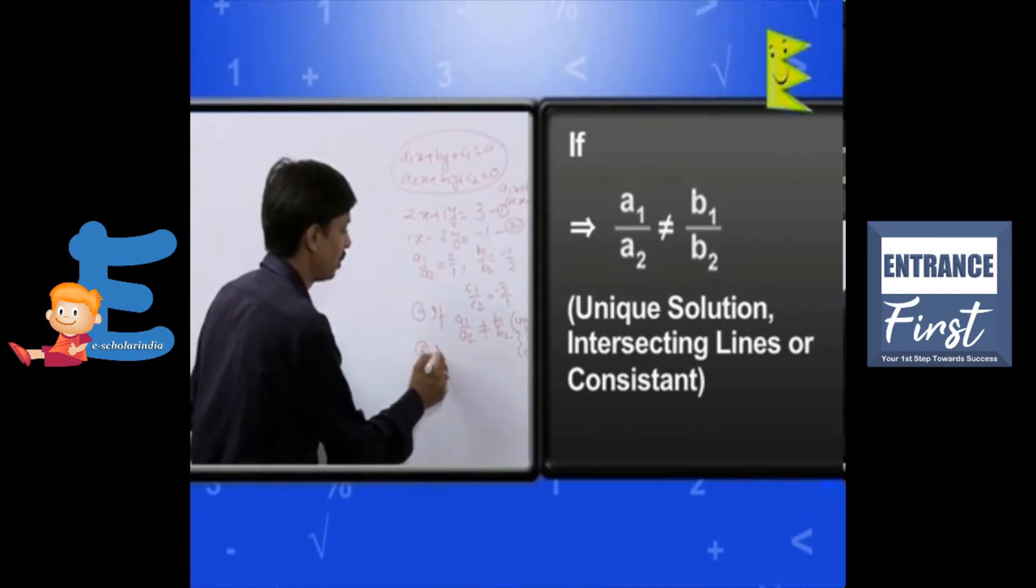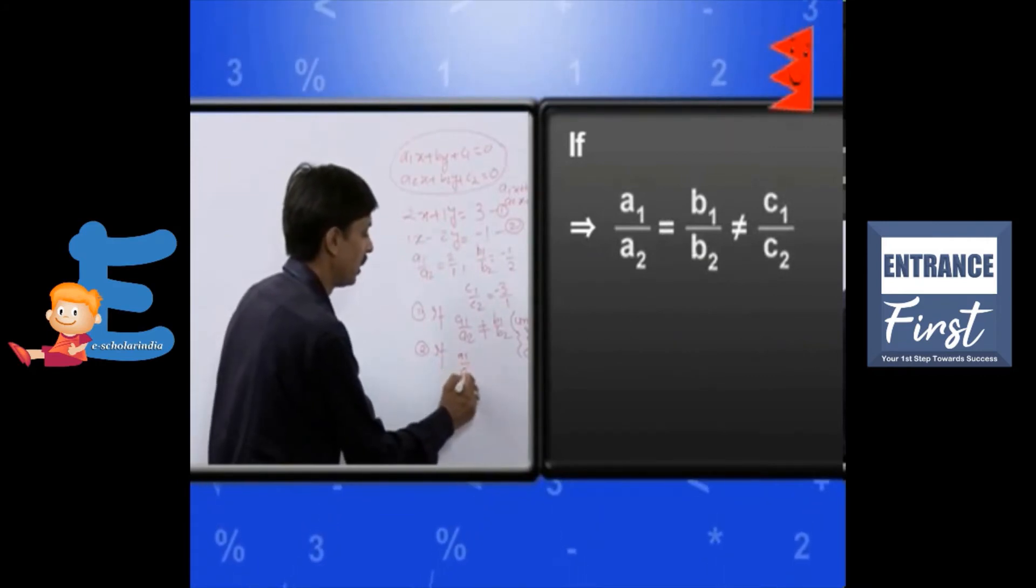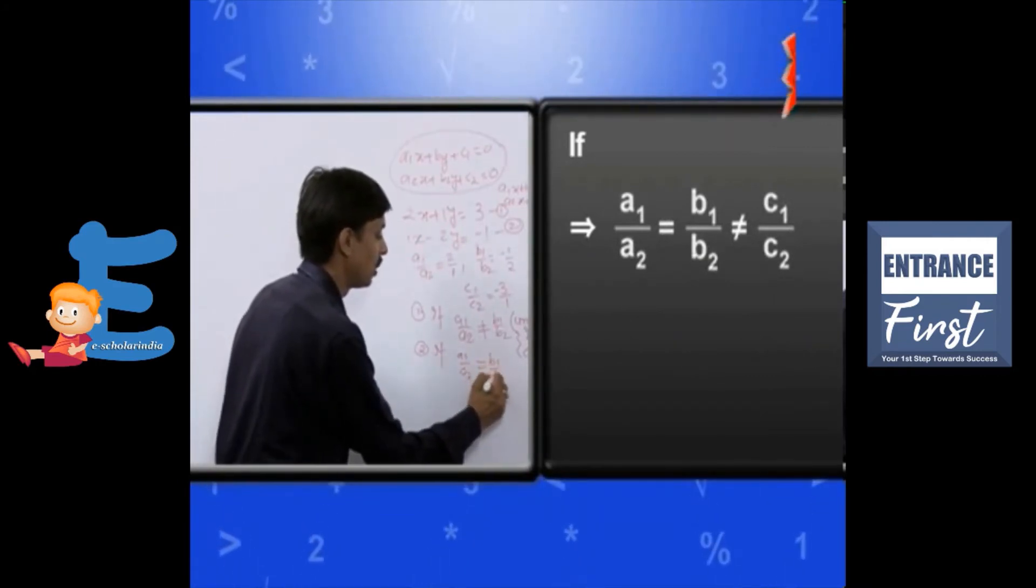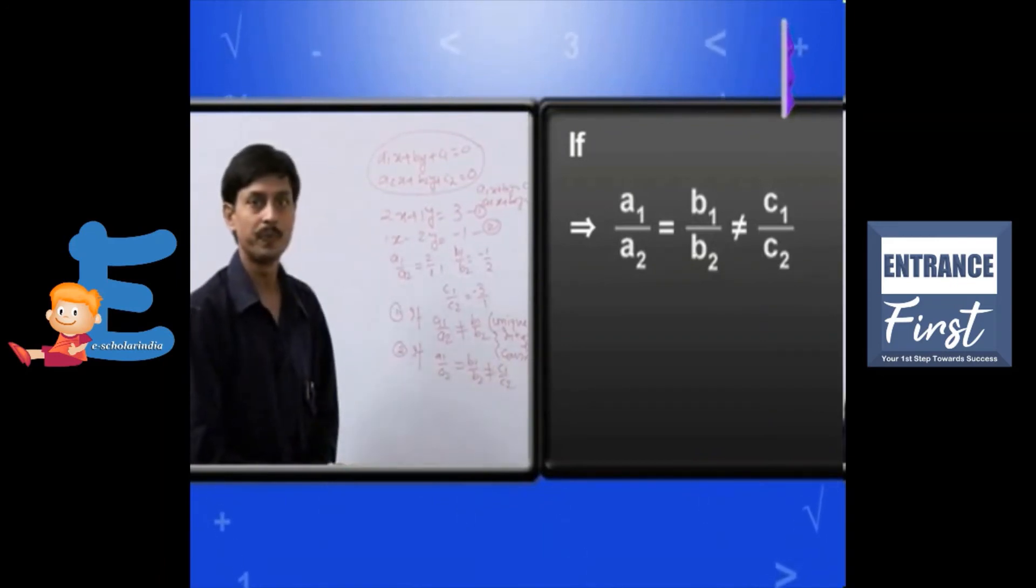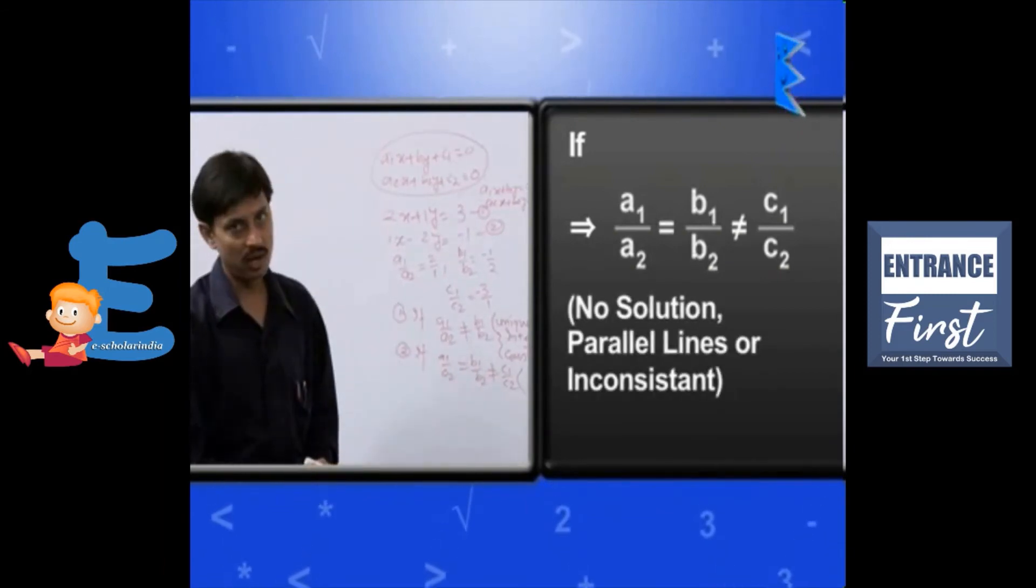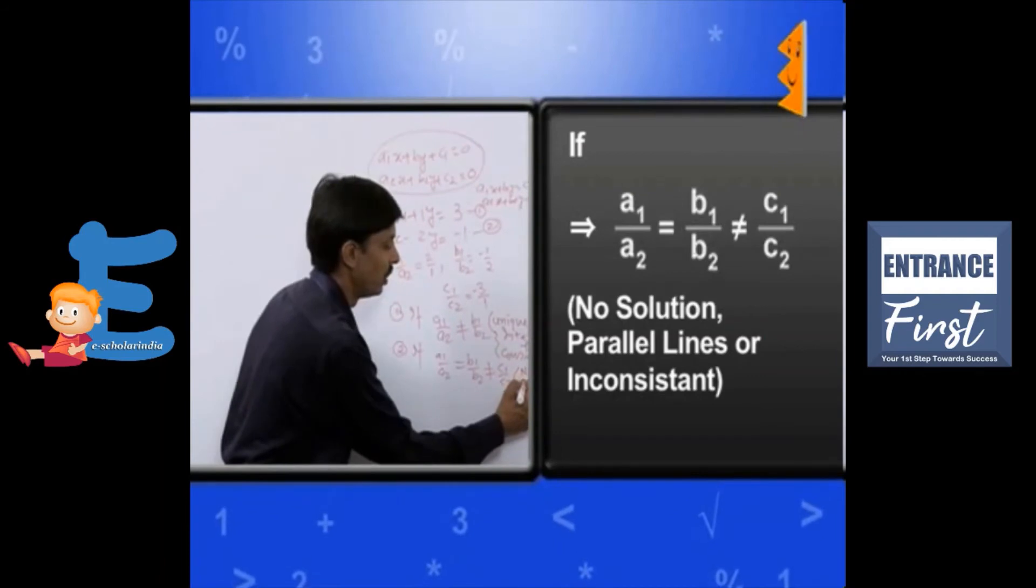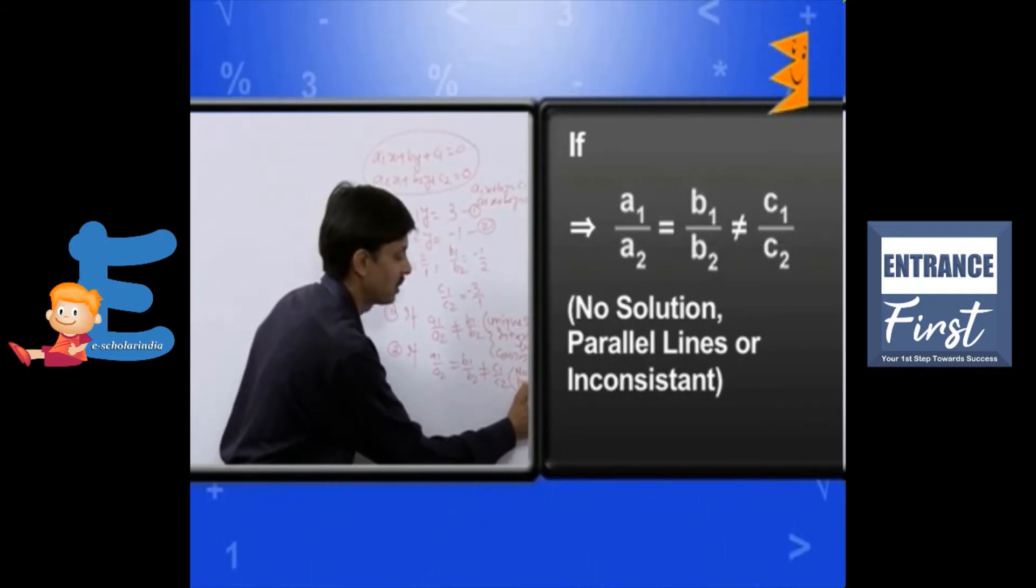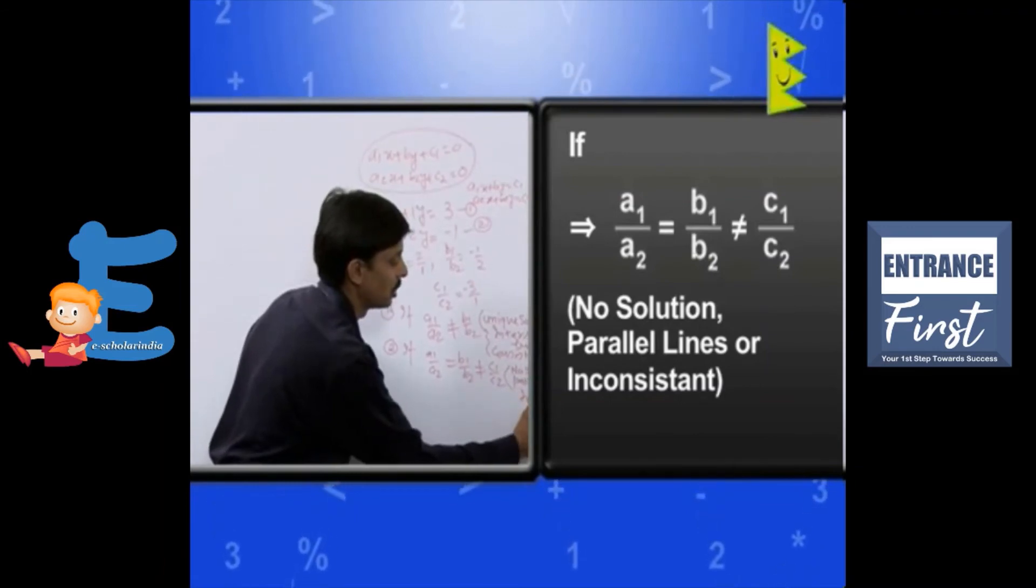The second situation is if a1 upon a2 is coming out to be equal to b1 upon b2 not equal to c1 upon c2. This is known as the condition of parallel lines. We say it as no solution, parallel lines or we say inconsistent.